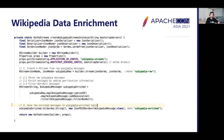Here is sample code for the Wikipedia example. First a Kafka stream is created from the Wikipedia raw topic, then each raw message is parsed and the IP address is mapped to a geolocation using the MaxMind GeoIP database lookup. Any null messages are then filtered out, and finally the enriched messages are sent to a Wikipedia enriched topic.